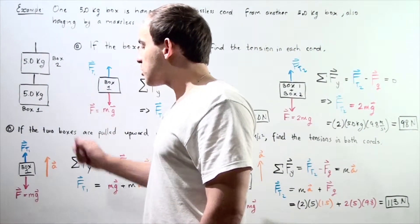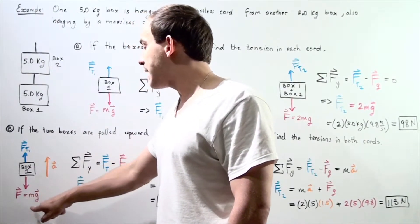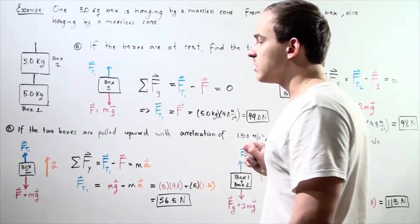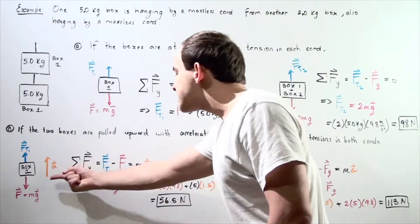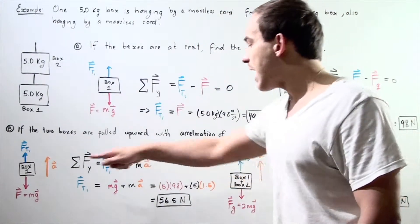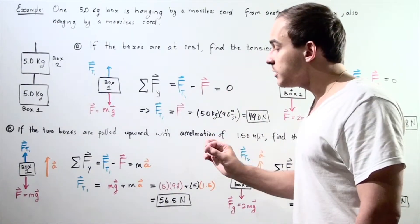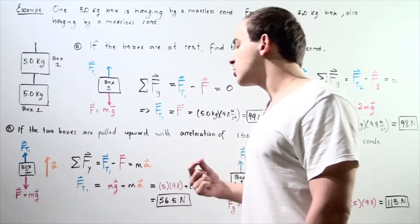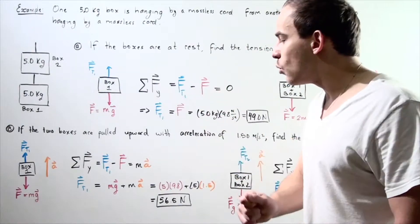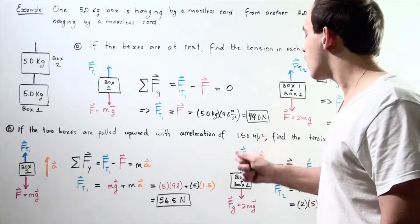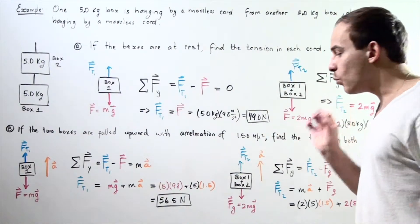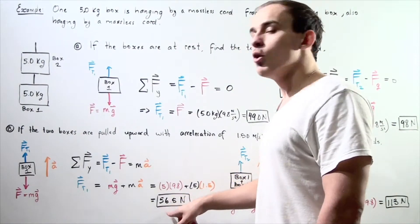The force going downward on box one is gravity, m times g. The force pulling up is the tension in rope one, FT1. Summing forces along the y-axis: FT1 minus the force of gravity equals m times a. Solving for the tension in rope one, we get: FT1 equals mass times g plus mass times a, so 5.0 times 9.8 plus 5.0 times 1.5, which gives us 56.5 newtons.